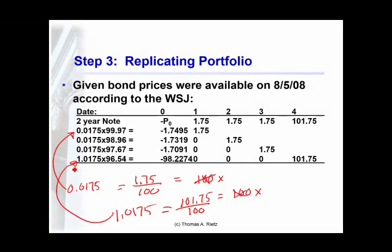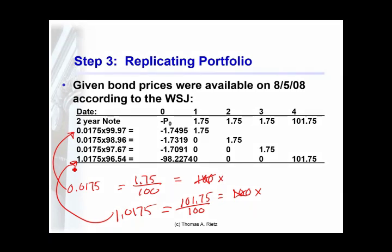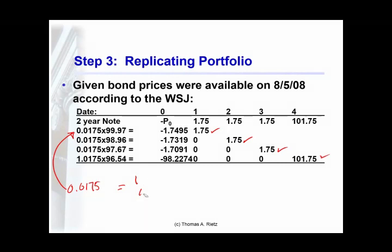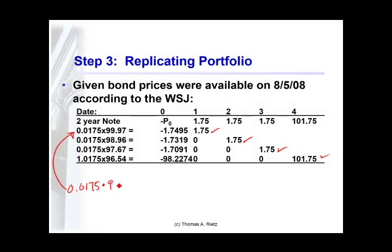Dividing through gives me 1.0175 for period four. So all I'm doing is finding a number that, when I multiply the future cash flow in the zero coupon bond, I get exactly the same cash flows as the coupon bond. Given that, how much does each of those cash flows cost? If I have to multiply the zero coupon bond by 0.0175 to replicate the $1.75 cash flow in one period, I will also multiply its price by 0.0175 — and that's how much it costs me today.